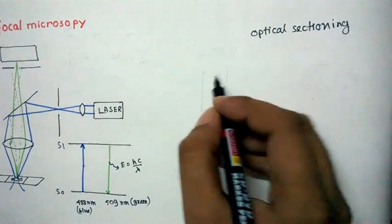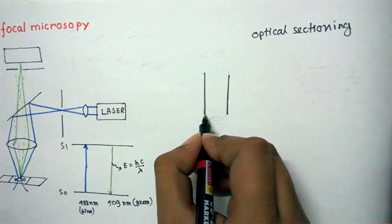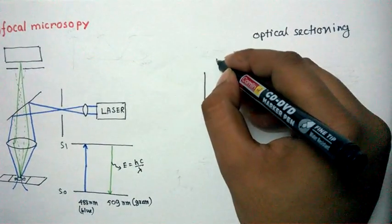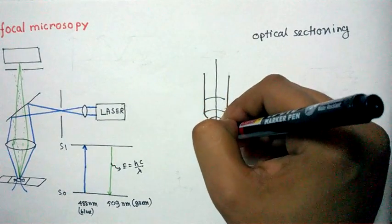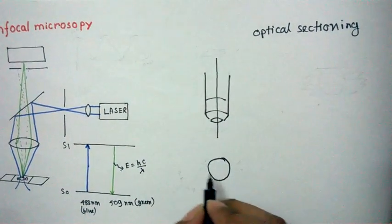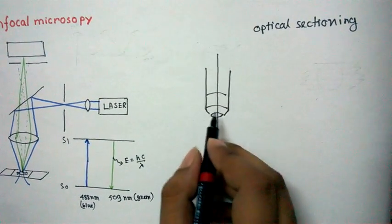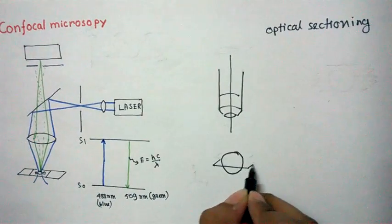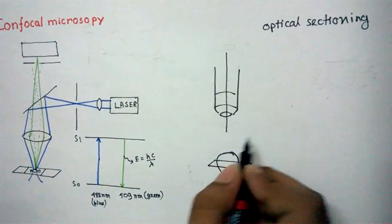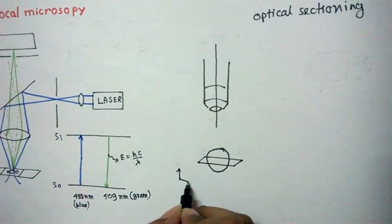For optical sectioning, here we have a confocal objective lens and this is the z-axis. We have a spherical specimen. At one instance, the lens is taking light from this focal plane and the detector is detecting it.